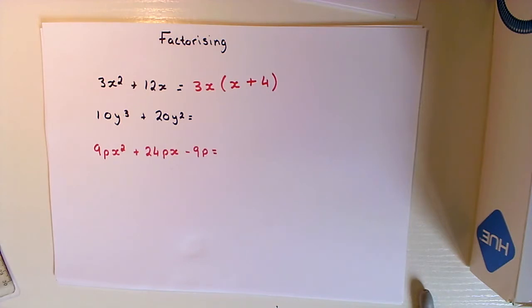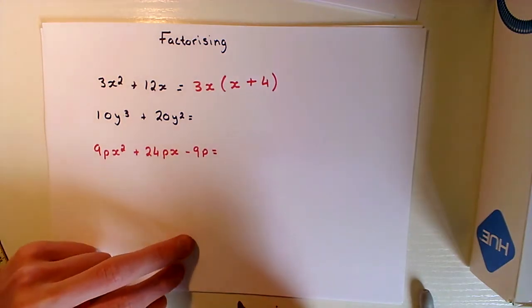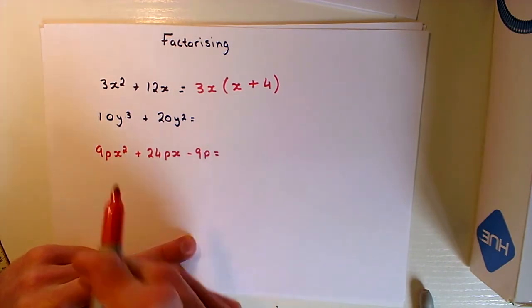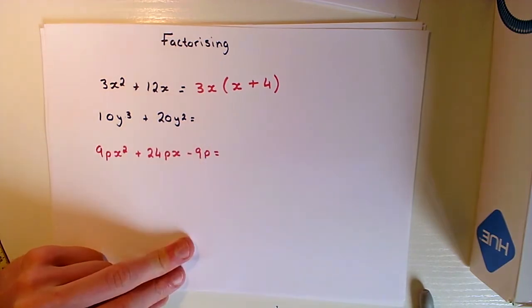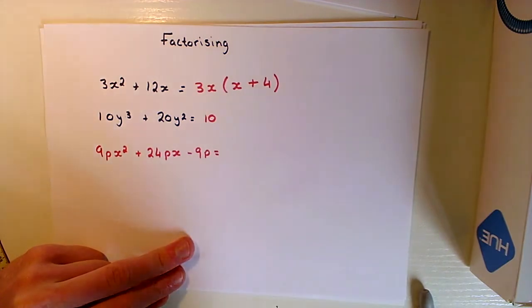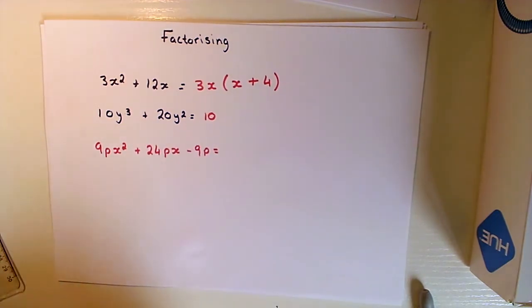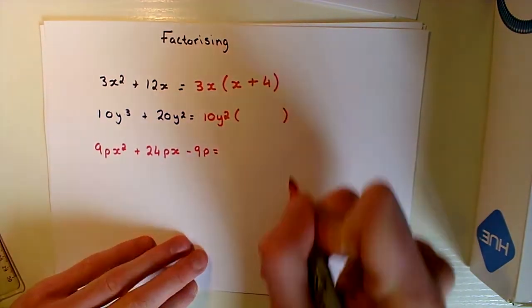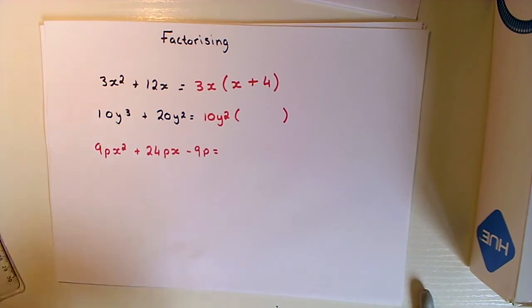With the second one, I would encourage you to pause the video and give it a go. Now let's consider our coefficients first and foremost. What's the highest common factor of 10 and 20? Well, this one is pretty straightforward. The highest common factor is 10. Then we have a Y cubed and a Y squared. So in terms of our variables, what is the highest common factor of Y squared and Y cubed? Well, that will be Y squared, and now we can look towards our brackets.